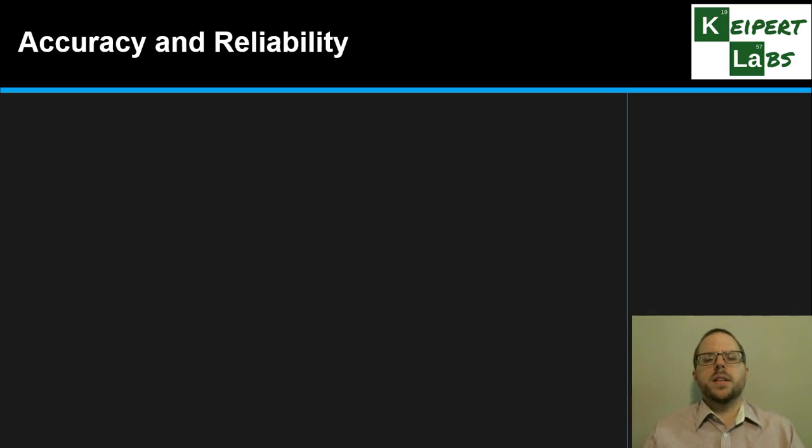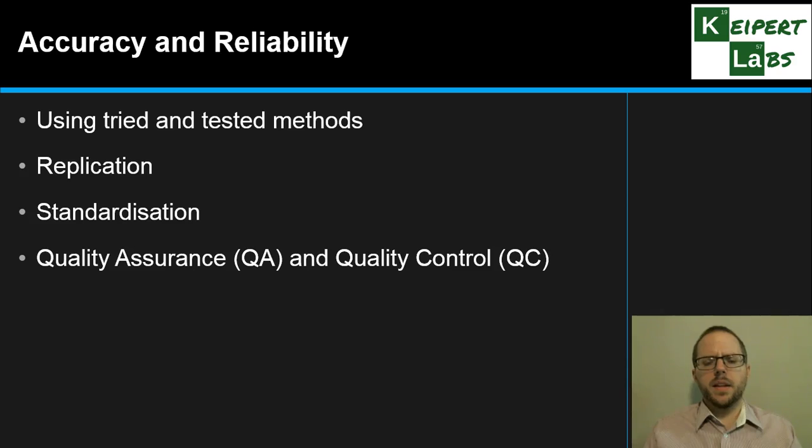Now we're going to address the second half of this presentation, thinking about accuracy and reliability and how those two things connect together. We're looking at using tried and tested methods, the concept of replication, standardization and then two related terms of quality assurance, QA, and quality control, QC, which are really going to help to increase our accuracy and reliability above reproach.